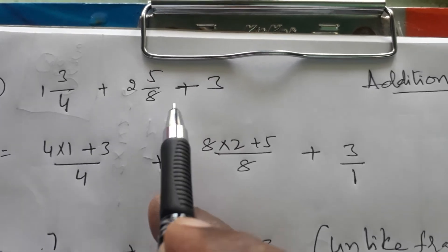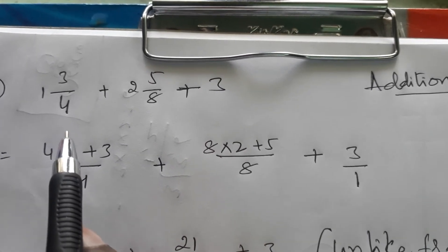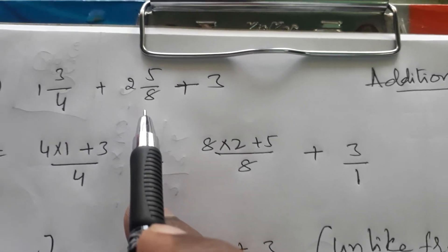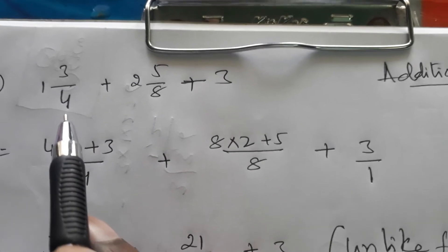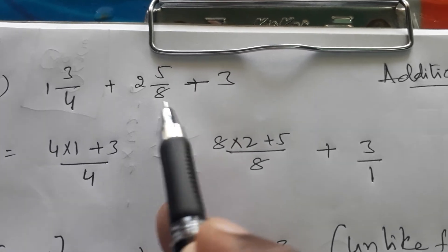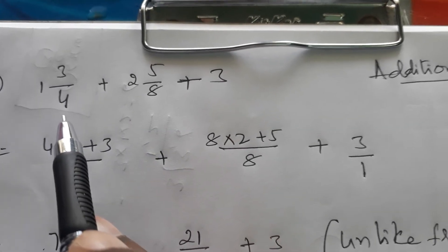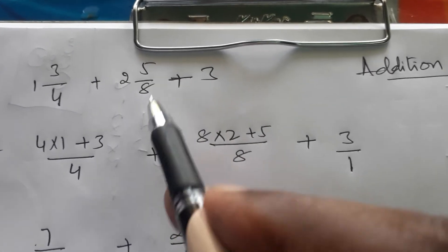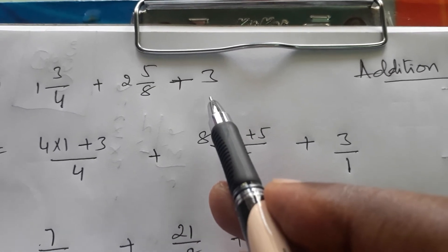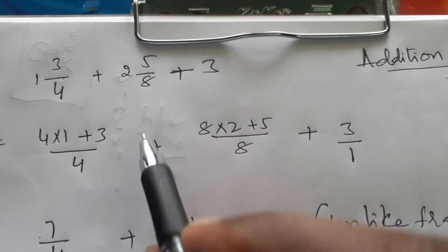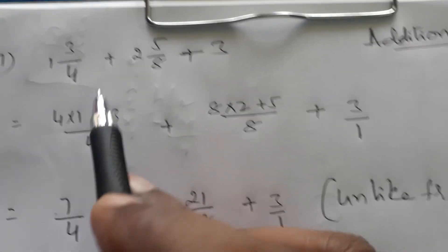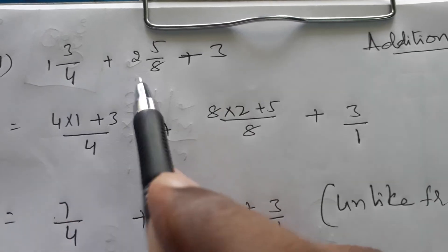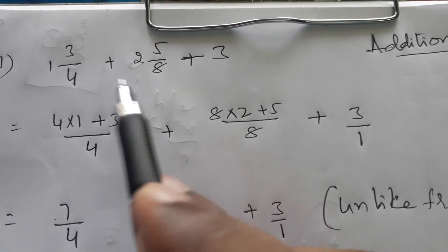These are mixed fractions. Till now you have done with only normal fractions, but here the fractions are different — they are in mixed fractions: 1 3/4, 2 5/8, plus 3. Now how to add here? See, before adding, check whether the fractions are normal fractions or mixed fractions.